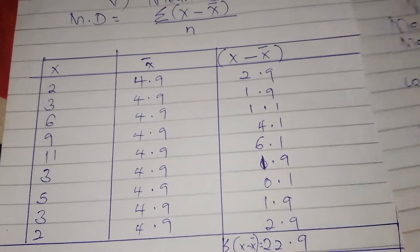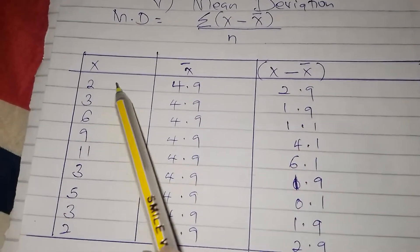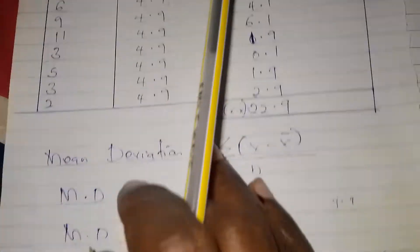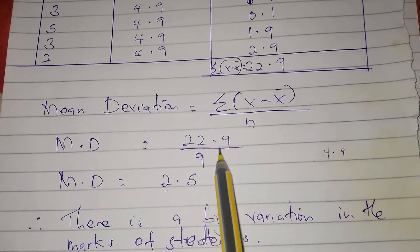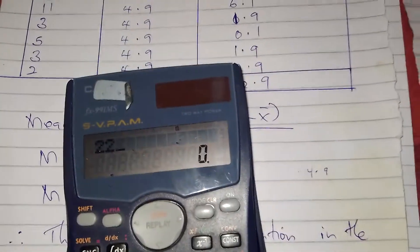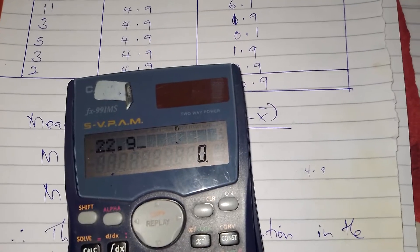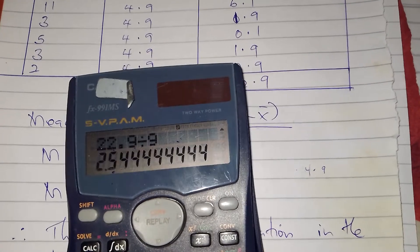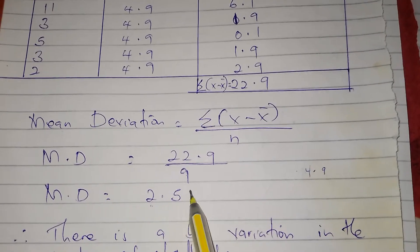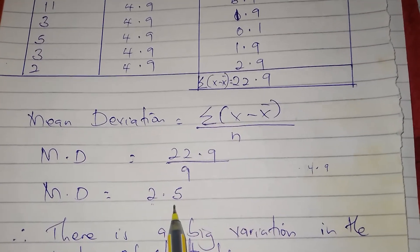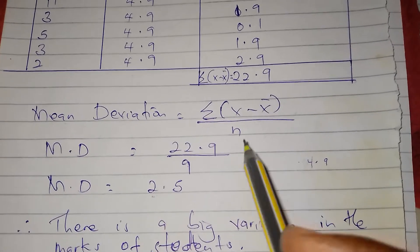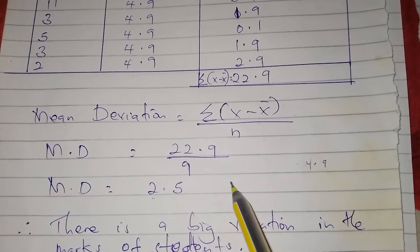We count them: 1, 2, 3, 4, 5, 6, 7, 8, 9. So 22.9 out of 9. 22.9 out of 9 is 2.54, so it is 2.5. Mean deviation equals to 2.5.